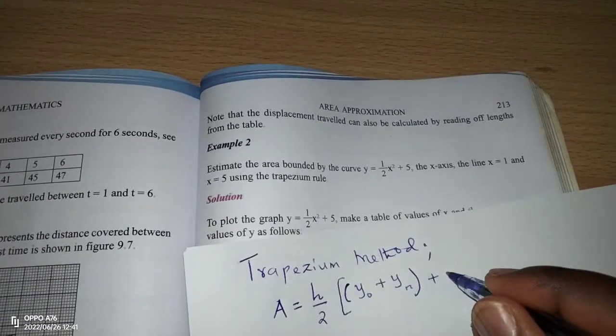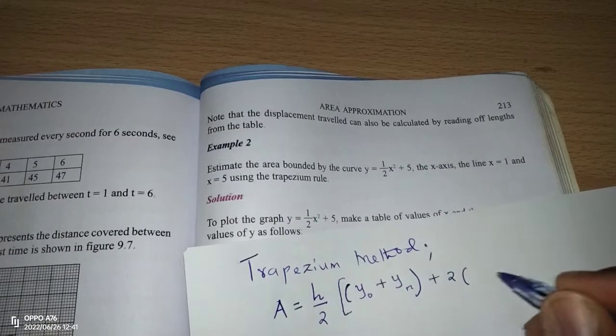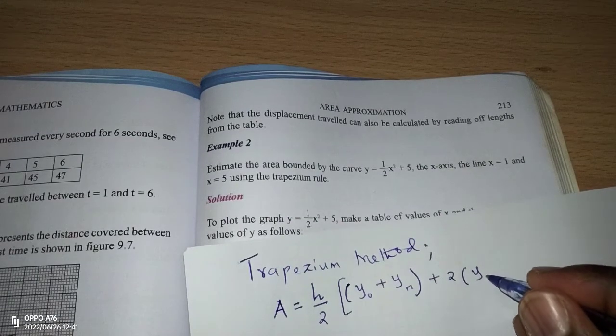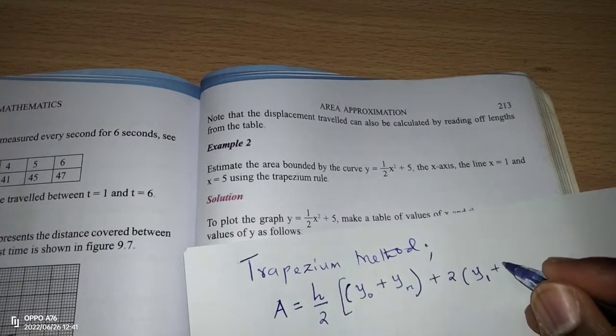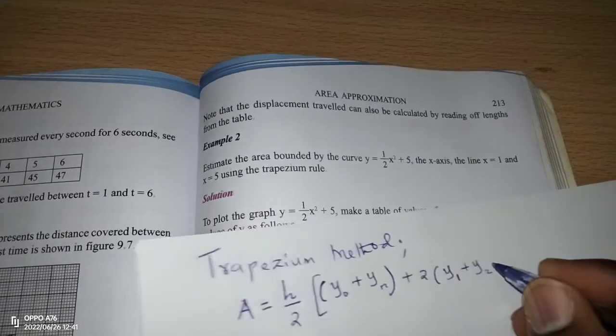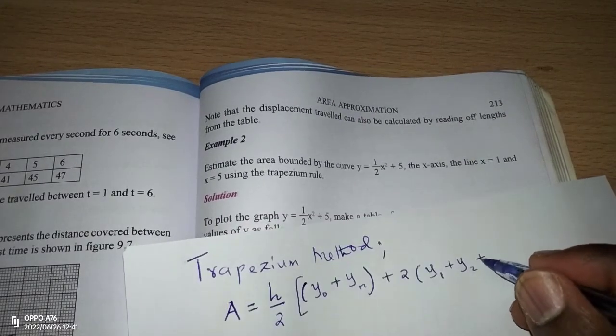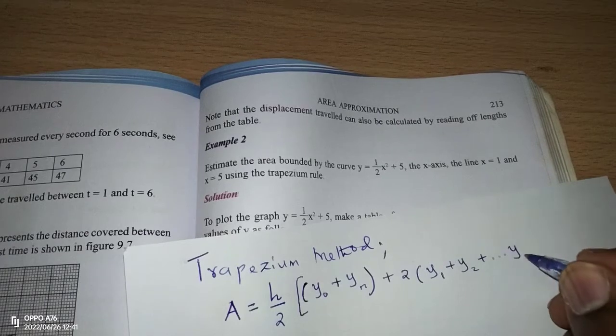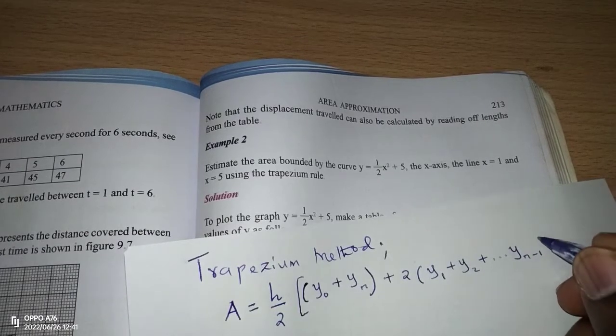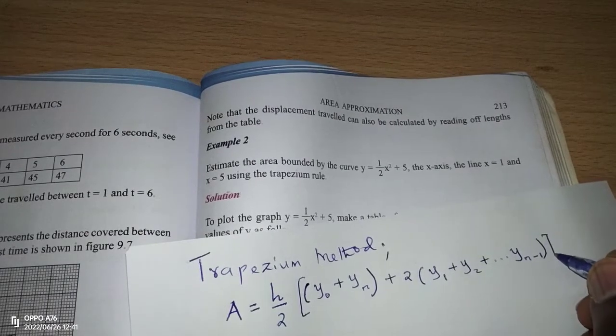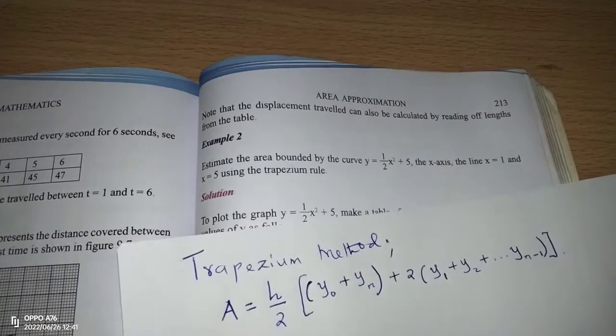Then plus 2 multiplied by the other heights: y1, y2, up to yn minus 1. Then we close the curl brackets.